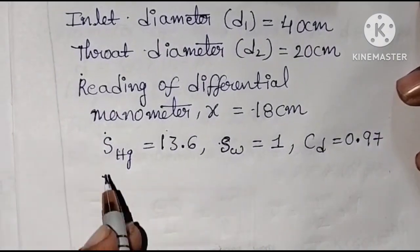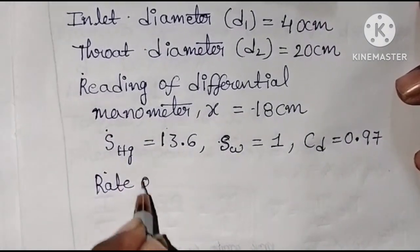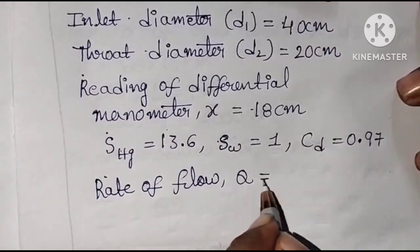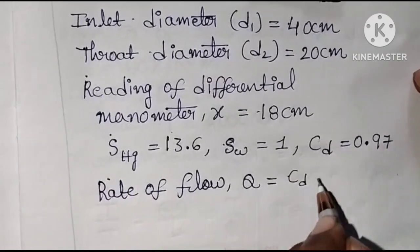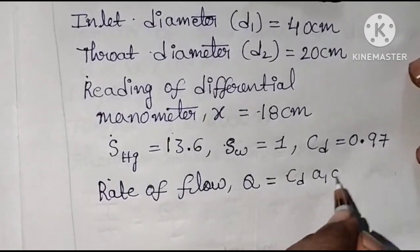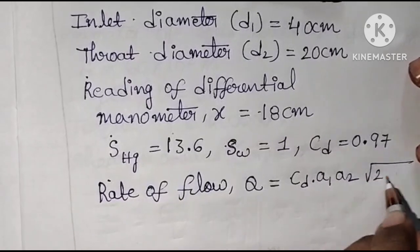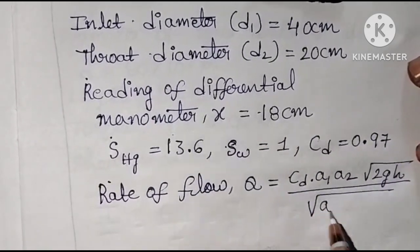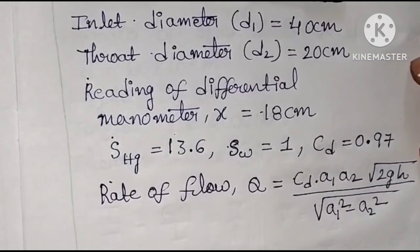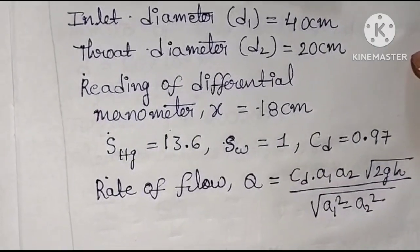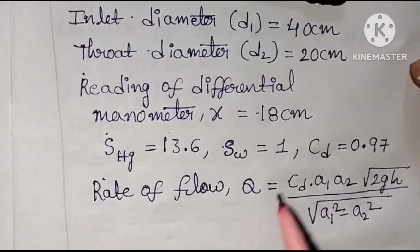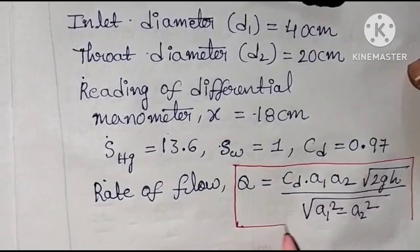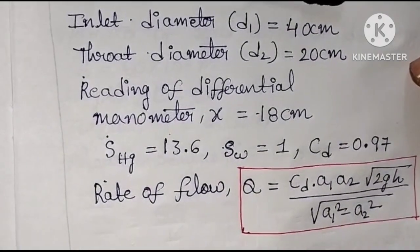We need to find the rate of flow. The rate of flow measured by a venturimeter is given by: Q = CD × A1 × A2 × √(2GH) / √(A1² − A2²).